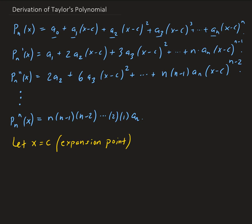Our goal is to find a0, a1, a2, and so on. We're going to equate these to the derivatives of the function evaluated at the expansion point. The first requirement is that the function value at our expansion point equals the polynomial value at that point. When we plug in x = c into P_N(x), we're left with a0, because the rest of the terms go to 0. So that means F(c) must equal a0.